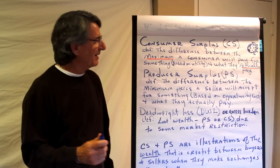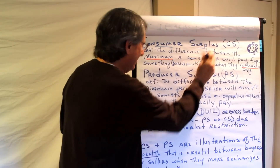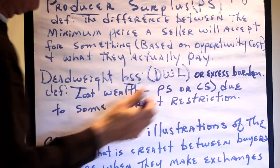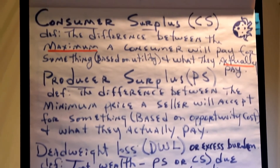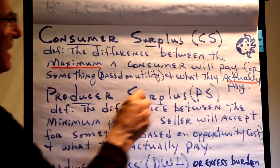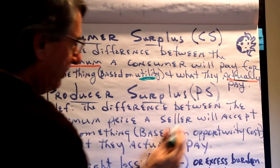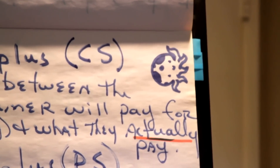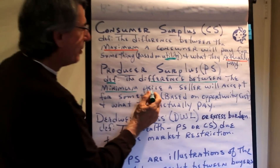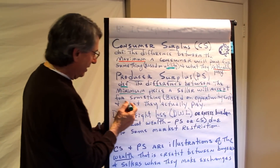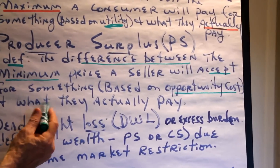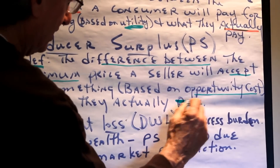We are talking about consumer surplus, producer surplus, and deadweight loss, also previously known as excess burden. Consumer surplus is defined as the difference between the maximum a consumer will pay for something based on their utility and what they actually pay. Producer surplus is the difference between the minimum price a seller will accept for a good they are selling based on their opportunity cost and what they actually receive.